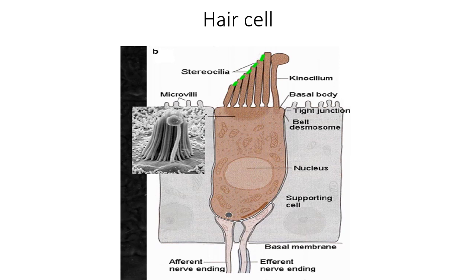Now, hair cells. There is a difference between the vestibular hair cell and the auditory hair cell. This is a diagram of a vestibular hair cell — an electron microphotograph of a vestibular hair cell — showing cilia with a long kinocilium that has a bulb end. This is a schematic diagram of the same hair cell.